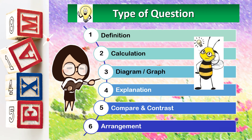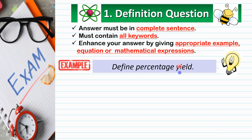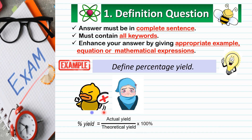These are the tips to answer definition type questions. The answer must be in complete sentences and contain all the key words. Enhance your answer by giving an appropriate example, equation, or mathematical expression. This is a sample definition type question. The first sample answer is wrong because it only shows the formula — for this type of question, the answer must be in complete sentences and should include all the key words.